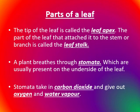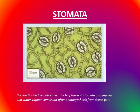A plant breathes through stomata, which are usually present on the underside of the leaves. Stomata take in carbon dioxide and give out oxygen and water vapor. Carbon dioxide from air enters the leaves through stomata, and oxygen and water come out after photosynthesis from these pores.